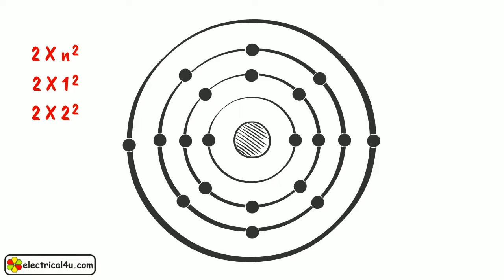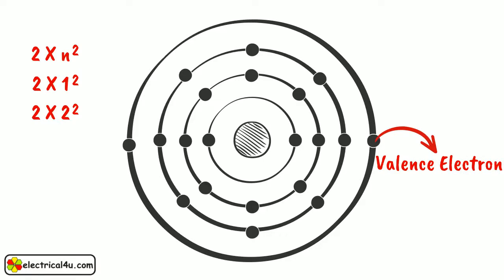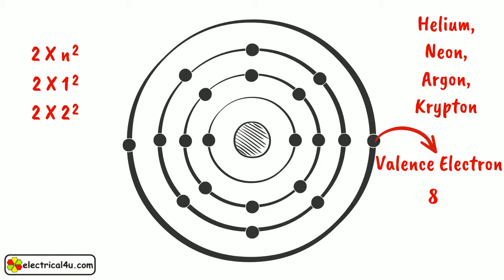The electron configuration of the calcium atom is shown in this figure. The electrons in the outermost energy level are called valence electrons. The maximum possible number of valence electrons is 8. If the number of electrons in the outermost orbit is 8, the atom becomes stable. Materials whose atoms naturally have 8 electrons in the outermost shell do not react with other materials, such as inert gases: helium, neon, argon, krypton, etc. These have completely filled outermost shells and do not react with other materials.